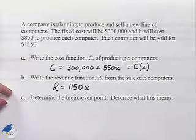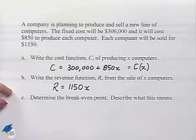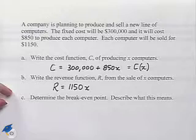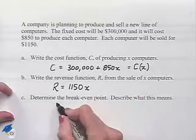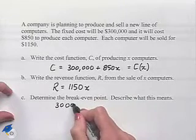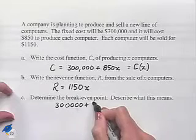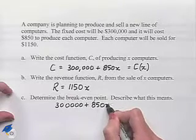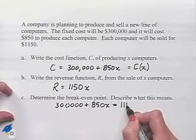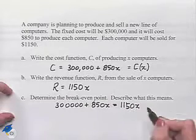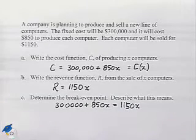Our break-even point is going to be telling us where we end up having our cost equal to our revenue. So let's take our cost, which is $300,000 plus $850x, and set it equal to our revenue of $1,150x. Now let's solve this equation.